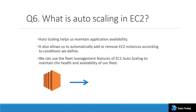What is auto scaling in EC2? Auto scaling helps maintain application availability across availability zones. If one instance fails, another instance will be available. It allows us to automatically add or remove instances according to conditions we define. We can use the fleet management feature of EC2 auto scaling to maintain the health and availability of our fleet — meaning the various EC2 instances created for a particular application hosted in AWS.